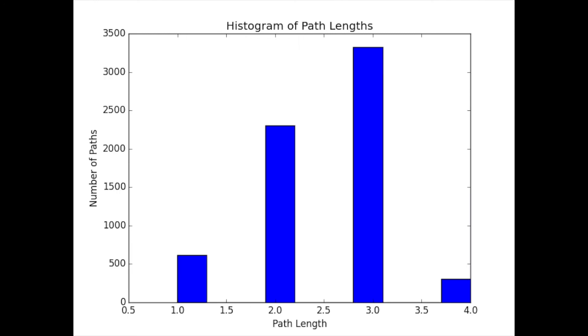The average path length for this network is 2, which implies that college football teams are very interconnected. Here is the histogram of path lengths for the network.